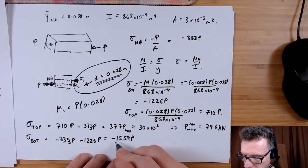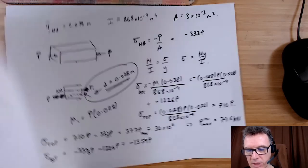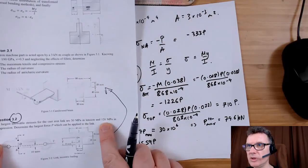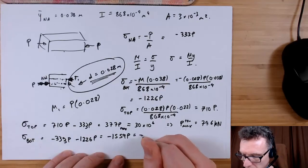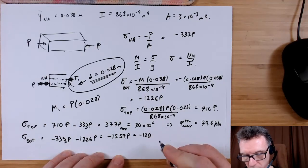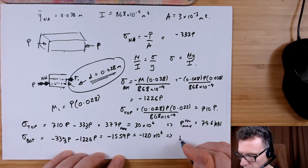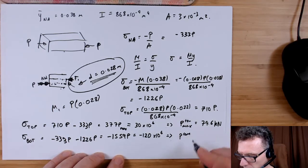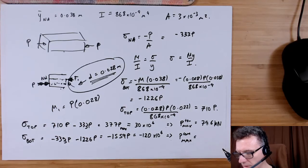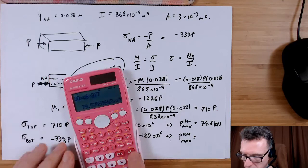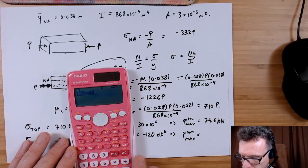Now do the same thing here. I can ignore the negative, so this is saying the maximum compressive stress is 120. So what I'll do is I'll put a minus in front of that, so minus 120. Compressive stress, therefore P compression max equals, so 120 divided by... 120 times 10 to the 6.